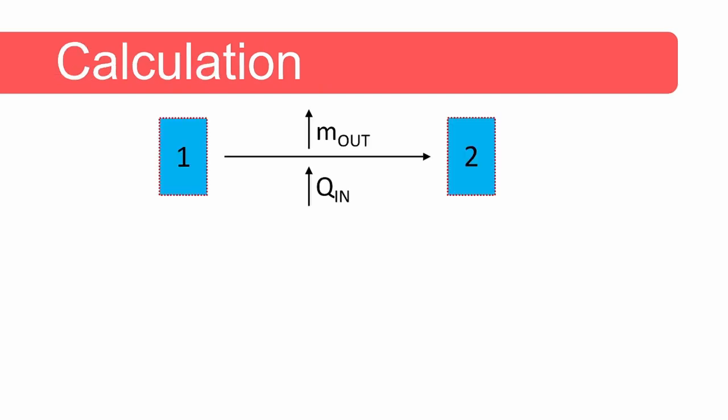Let's draw a picture. We consider only the water; the system boundary is given by the red dashed lines. Even though the volume decreases slightly due to the small amount of steam escaping — meaning some boundary work is done — we assume this boundary work is negligibly small. Steam flows across the system boundary, and heat is also transferred across the system boundary.